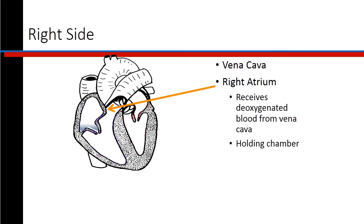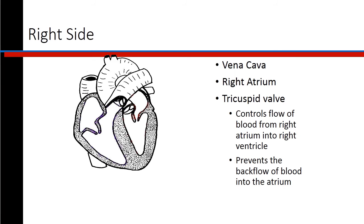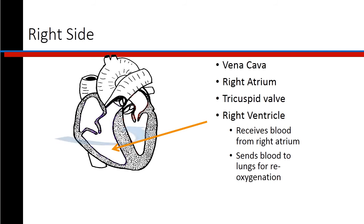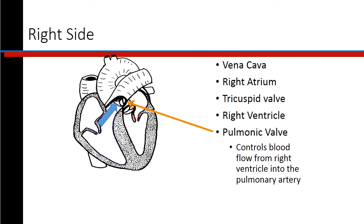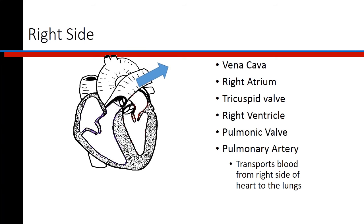The right atrium receives deoxygenated blood from the vena cava and is a holding chamber. The tricuspid valve controls the flow of blood from the right atrium into the right ventricle and prevents backflow of blood into the atrium. The right ventricle receives blood from the right atrium and sends it to the lungs for reoxygenation. The pulmonic valve controls blood flow from the right ventricle into the pulmonary artery, which transports blood to the lungs.